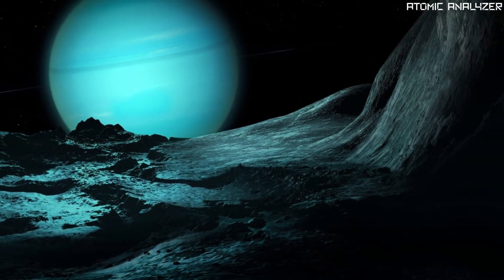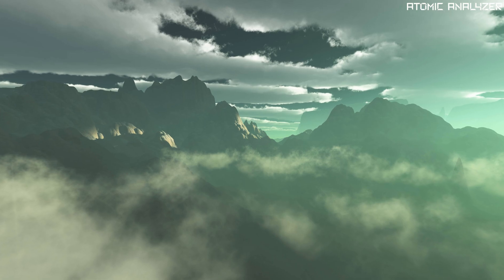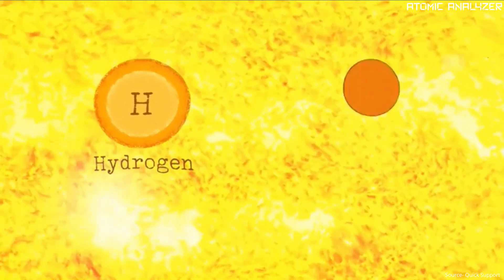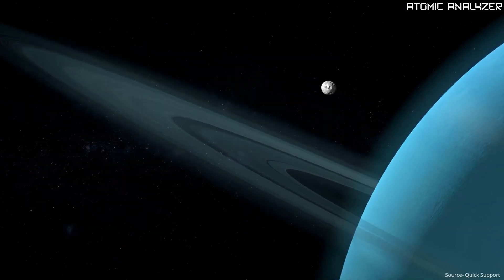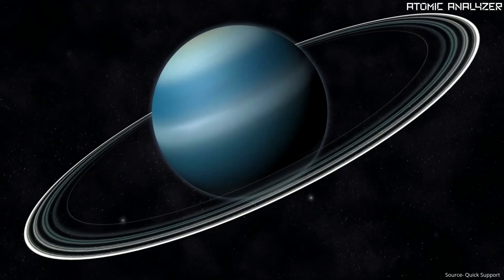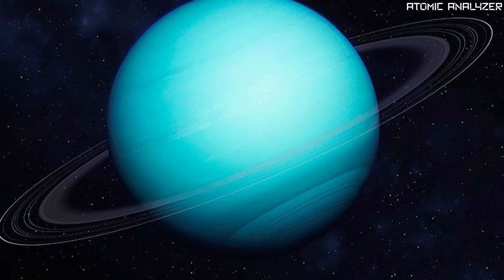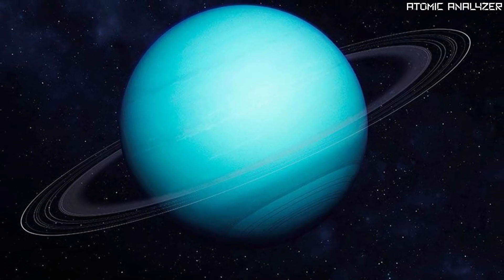Now let's talk about the atmosphere. Uranus has a thick atmosphere made mainly of hydrogen and helium, just like Jupiter and Saturn. But what makes it special is the blue-green color which is due to the presence of methane gas. It's like a giant gas ball with a beautiful hue.